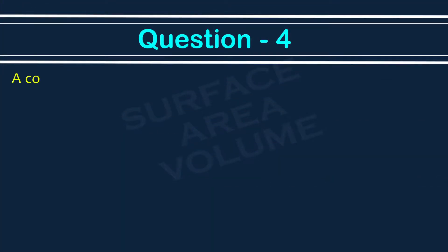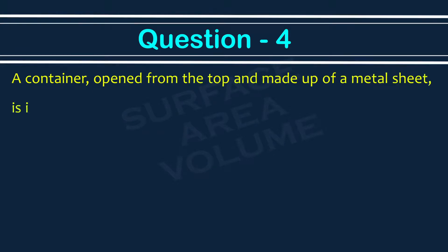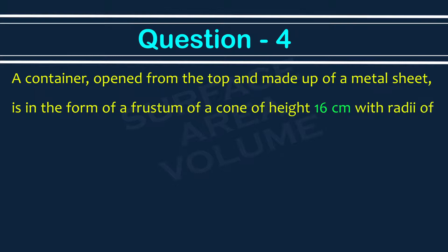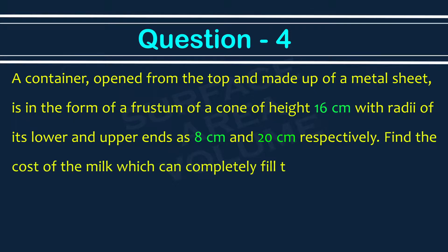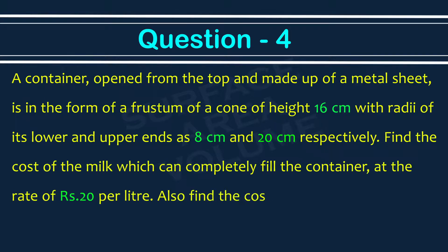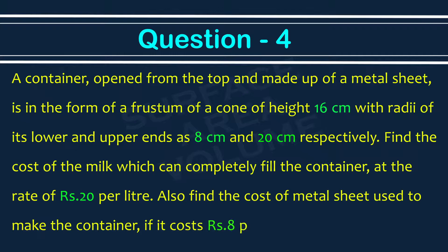Surface area and volume, Exercise 13.4, Question number 4. A container open from the top, made of metal sheet, is in the form of a frustum of a cone of height 16 centimeter with radii of its lower and upper ends as 8 centimeter and 20 centimeter respectively. Find the cost of milk which can completely fill the container at the rate of rupees 20 per litre. Also find the cost of metal sheet at rupees 8 per 100 centimeter square. Take pi equal to 3.14.